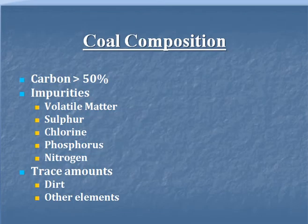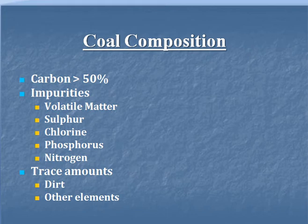The composition of coal is mostly carbon — more than 50% is carbon — along with other impurities like volatile matter, sulfur, and trace amounts of chlorine, phosphorus, nitrogen, oxygen, and other elements.